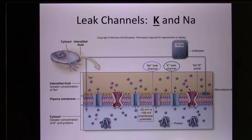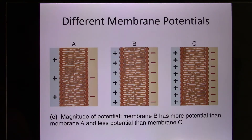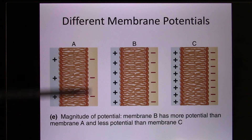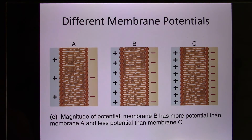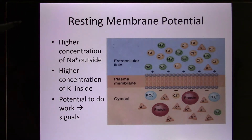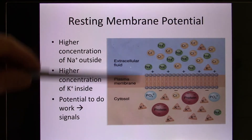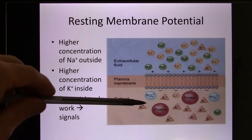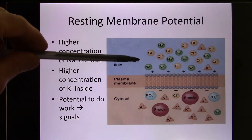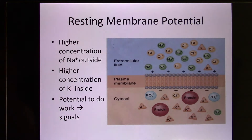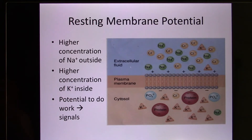We'll discuss this again in unit four with the neuron. The difference in membrane potential is due to ion separation: less separation means less voltage, more separation means a bigger voltage difference. When they reach a stable state, we call it the resting membrane potential — the normal situation of a living cell. Inside is more negative, outside is more positive, inside has high potassium, outside has high sodium and high chloride. In a neuron it's about minus 70 millivolt, and in muscle it's minus 90 millivolt.